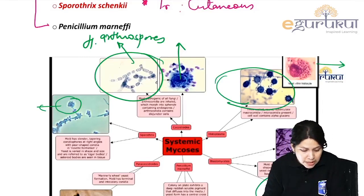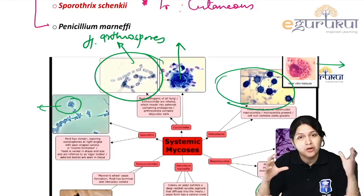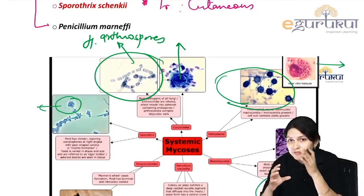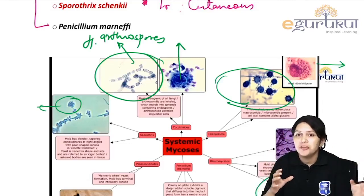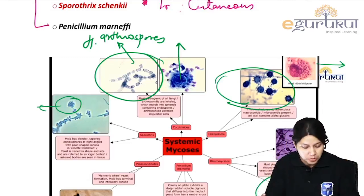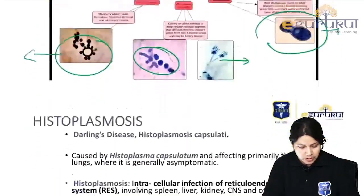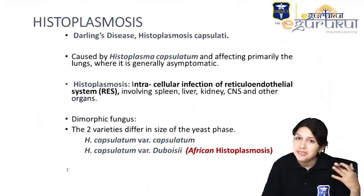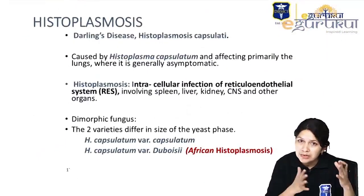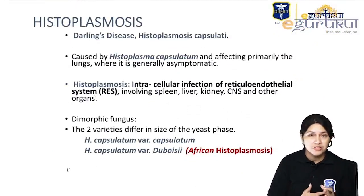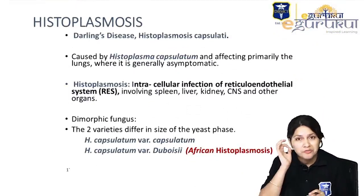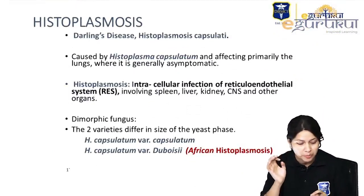Arthrospores are rectangular spores developed by the fragmentation of hyphae along the septa. We will quickly review the important points regarding dimorphic fungal infections, as this is a very important topic.